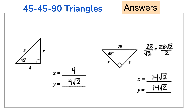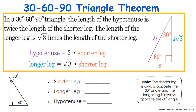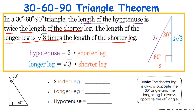Now let's move on to the 30-60-90 degree triangle. The 30-60-90 degree triangle theorem states that the length of the hypotenuse is twice the length of the shorter leg, and the length of the longer leg is the square root of three times the length of the shorter leg. The shorter leg is always opposite the 30 degree angle, and the longer leg is always opposite the 60 degree angle. Everything is in reference to that shorter leg.